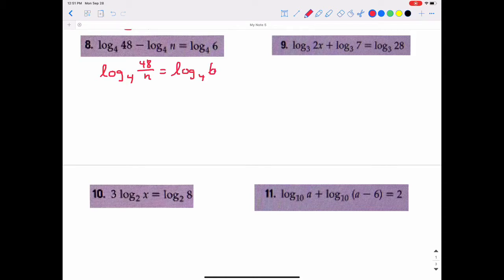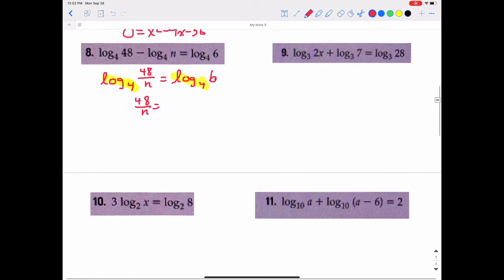So log base 4 of 48 over n is going to equal log base 4 of 6. Since they are already the same bases, they're both log of base 4s, just like with exponents, if we can get exponents into the same base, then we just set the exponents to each other. If we have logarithms with the same base, then we just set what we're trying to take the logarithm equal to each other. So that just means that 48 over n equals 6, and then we are going to try to solve for n.